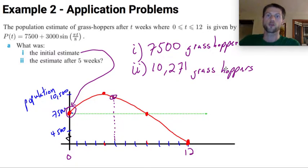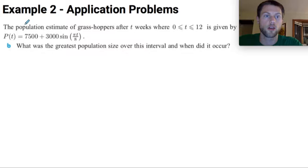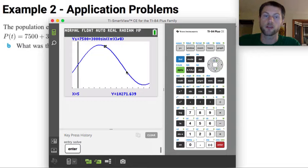And I think actually for the rest of these problems, I can just use my calculator to extract the information from this. So let's take a look at part B. What was the greatest population size over this interval, and when did it occur? So I can go to, again, to my graph, and I can calculate this. Now I should really know what this is.